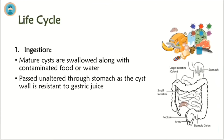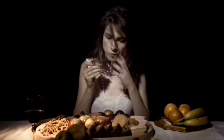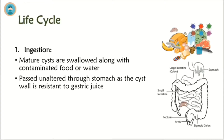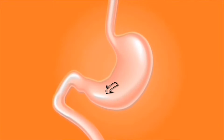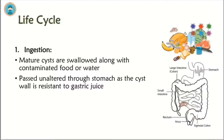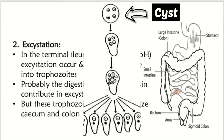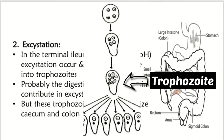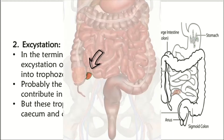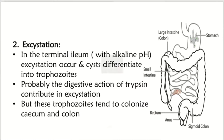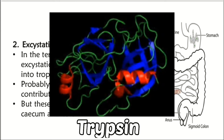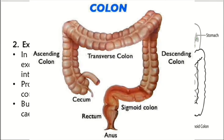Step 1 is ingestion. Mature cysts are swallowed along with contaminated food or water and passed unaltered through the stomach, as the cyst wall is resistant to gastric juice. Step 2 is excystation. As the name shows, the cyst differentiates into trophozoite. Excystation occurs in the terminal ileum with alkaline pH. Probably the digestive action of trypsin contributes to excystation, but these trophozoites tend to colonize the cecum and colon.